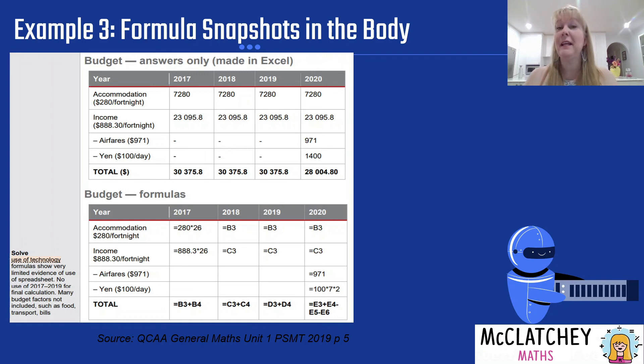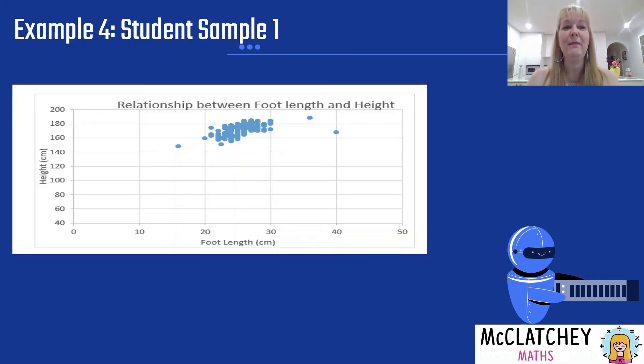Here is another example from the QCAA's general math syllabus, one of their budgeting PSMTs. This one only got use of technology not accurate and appropriate use of technology. The reason why is here they've used some formulas but there were other formulas where the student has simply added it up on a calculator and then inserted it into the spreadsheet. They haven't really used Excel as effectively as they could have. Here's another example from one of my previous students. You can see once again we've got all this excessive white space. This can be eliminated in Excel by pressing the plus button on your graph and then making adjustments to your x-axis and your y-axis so that we don't start at zero.